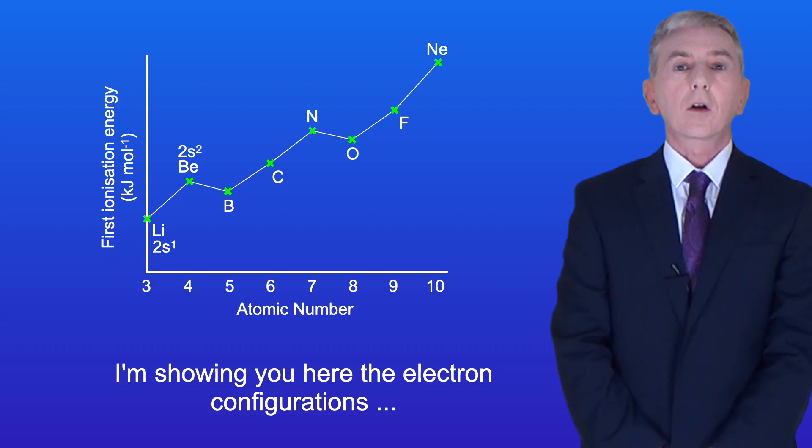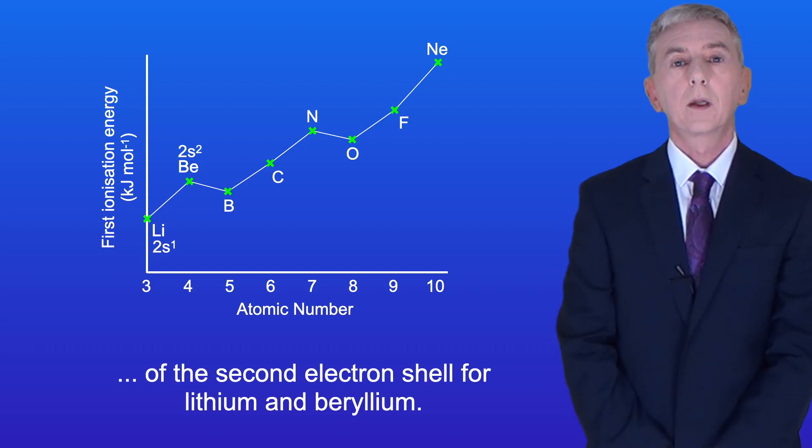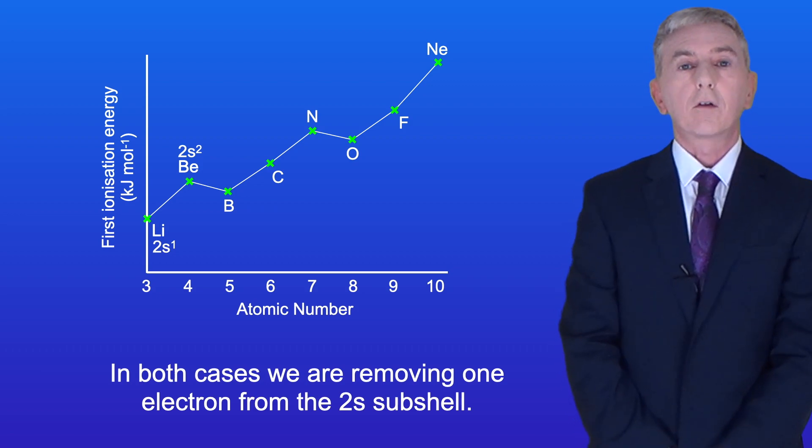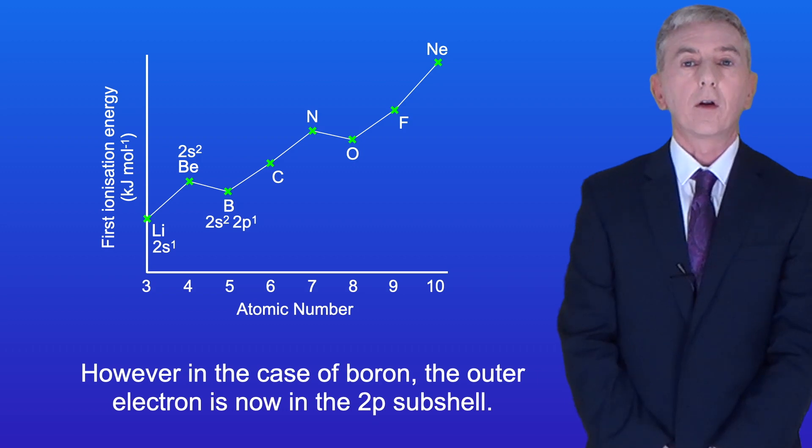I'm showing you here the electron configurations of the second electron shell for lithium and beryllium. In both cases we're removing one electron from the 2s subshell. However in the case of boron the outer electron is now in the 2p subshell.